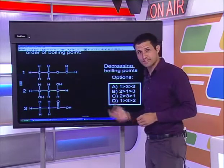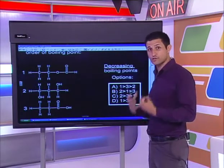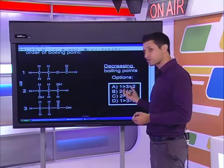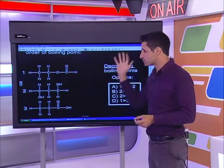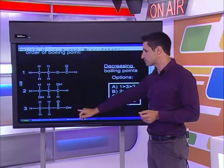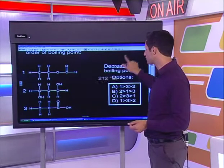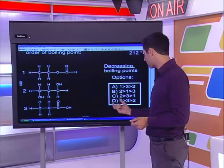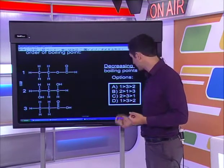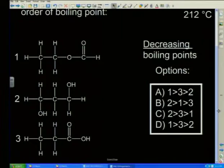I've got a couple of options. Option A says A has the largest boiling point, followed by three, then two. Option B starts with two, going to one then three. Option C says two is the highest boiling point, then three, then one with the lowest. Option D tells me one has the highest boiling point, then two, then three. I'm going to start feeding you some information - one of these objects is boiling at 212 degrees Celsius. I need to figure out if these other substances boil at higher or lower boiling points.